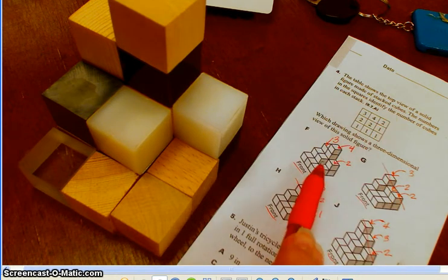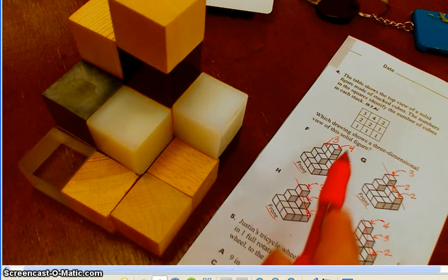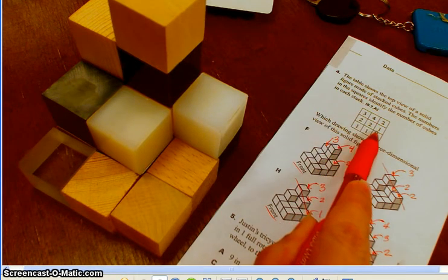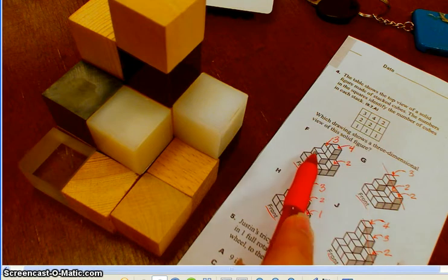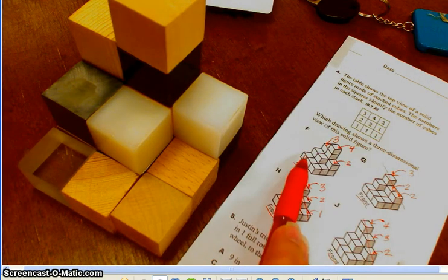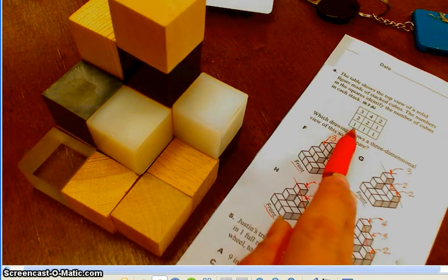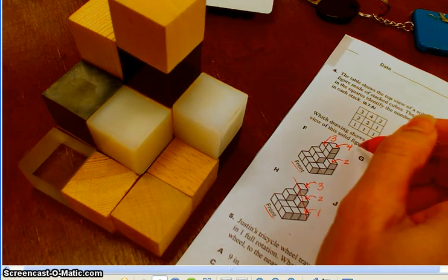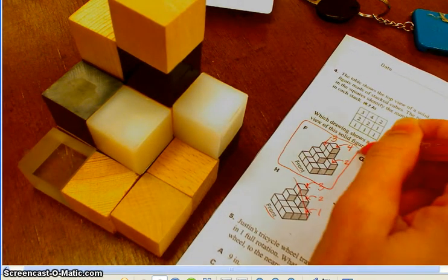But let's just make sure that we're doing it right. The middle row should be two, two, and then one. And then, is that right? Yes, that's two high, two high, one high. And the front row should be one, one, and one. So our answer choice is F.